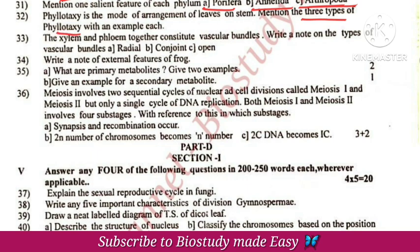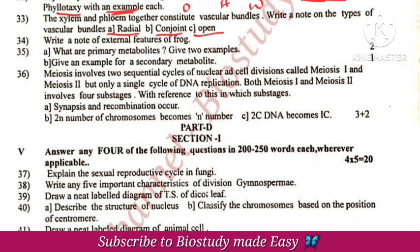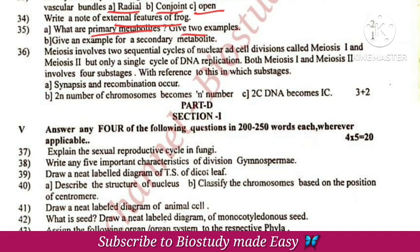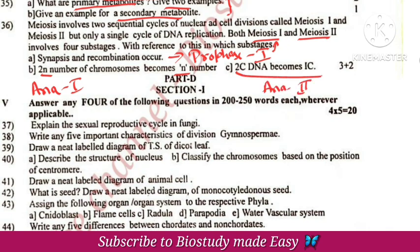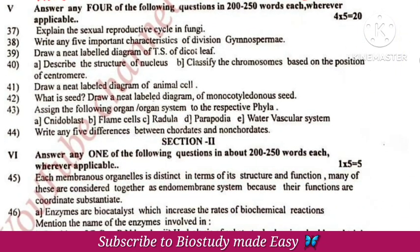Types of xylem are described with examples — alternate, opposite, and radial; conjoint is called open type, then vascular bundle. External features of frog is called morphology. Secondary metabolites — note the examples. Meiosis 1 and 2 — synapsis and recombination occur in prophase 1. The 2N chromosome number is seen in anaphase 1. 2C to 1C during anaphase 2 of meiosis 2. Sexual cycle in fungi involves plasmogamy, karyogamy, and meiosis of the zygote.